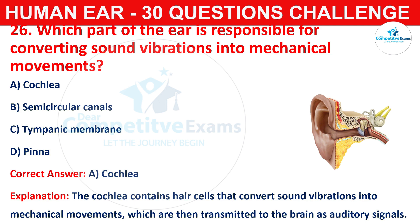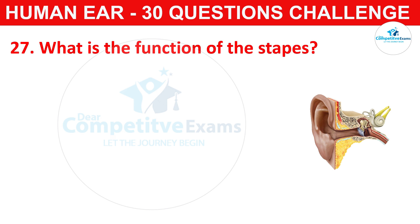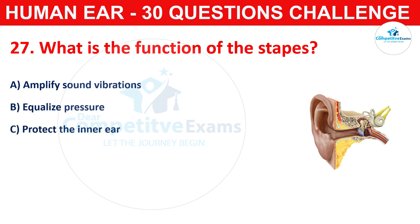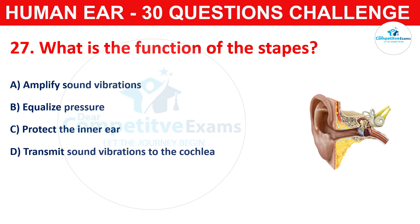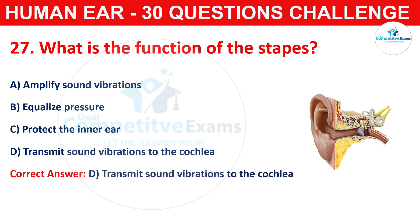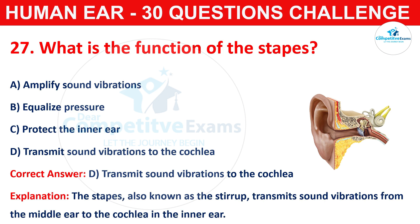Question number twenty-seven: what is the function of the stapes? Your options are amplify sound vibrations, equalize pressure, protect the inner ear, or transmit sound vibrations to the cochlea. The correct answer is D, that is transmit sound vibrations to the cochlea. The stapes, also known as the stirrup, transmits sound vibrations from the middle ear to the cochlea in the inner ear.